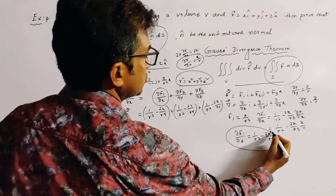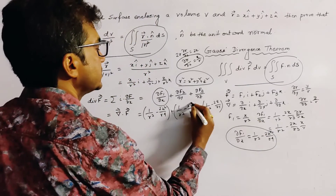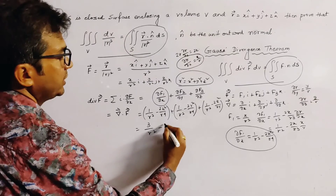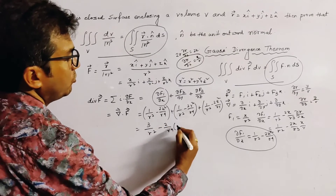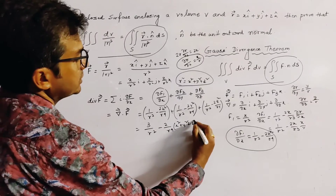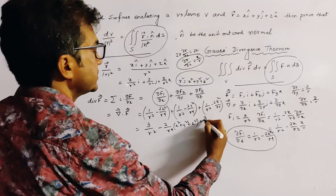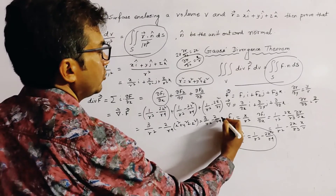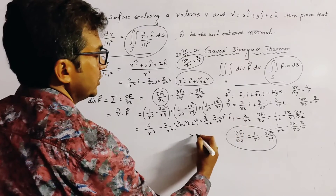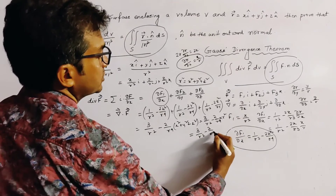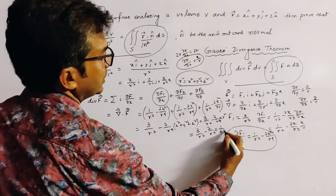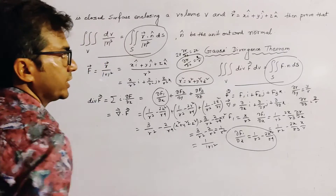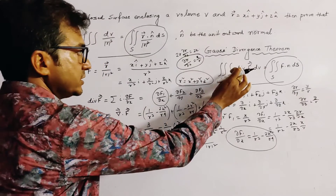Since x² + y² + z² = r², we get div(F) = 3/r² − 2r²/r⁴ = 3/r² − 2/r² = 1/r², which equals 1/|r|².